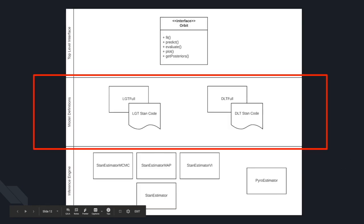The next middle layer is where the actual model math lives, which Zushi will go through shortly. We've implemented two families of models called LGT and DLT. Each model class has an associated Stan code file that compiles the first time that particular model is run — none of it compiles on package install. The prediction math is done outside of Stan: after the posterior parameters are estimated, that prediction math is written directly into this class. For our use case, we wrote it using PyTorch for vectorization speed-up.